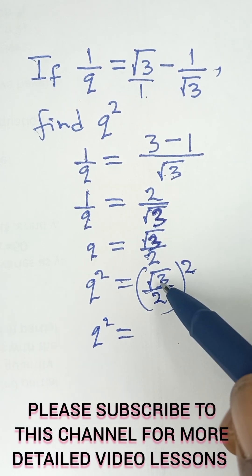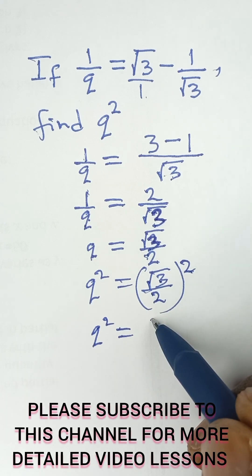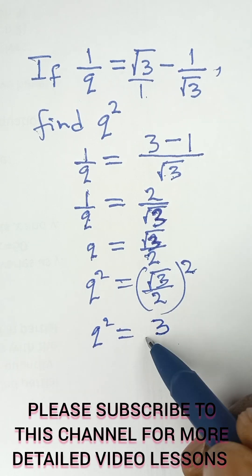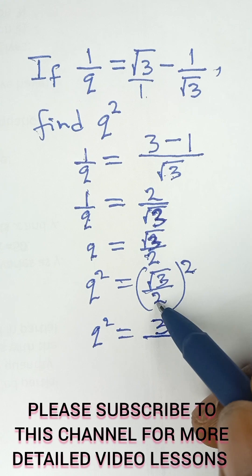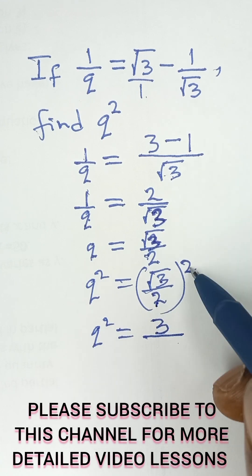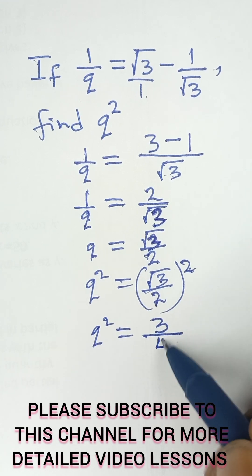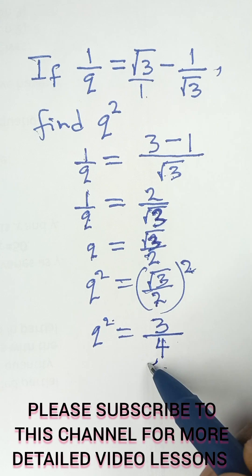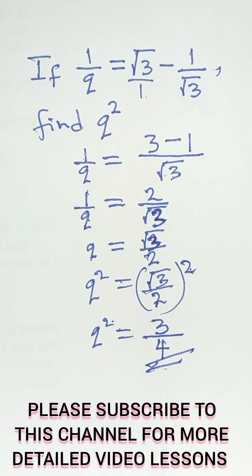Root 3 squared, which is the same thing as root 3 multiplied by root 3, will simply give us 3 without the root sign. And then all over, this 2 affects the 2 down here too, so 2 squared will give us 4. So that will give us Q squared as 3 over 4, which is the final answer.